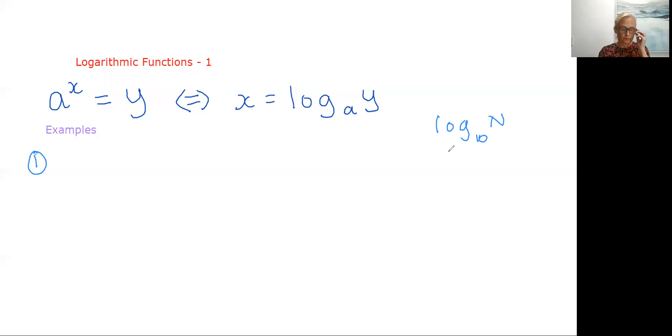Like the Richter scale for earthquakes and things like that and also log to base e is used a lot. We often write that as natural log. e is a very special number that I've mentioned before. It is an irrational number, a transcendental number in fact, and it's very special in maths for a whole heap of reasons.